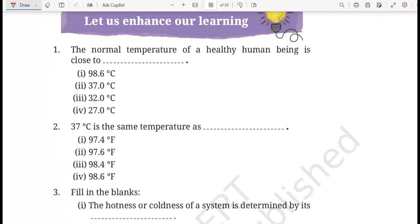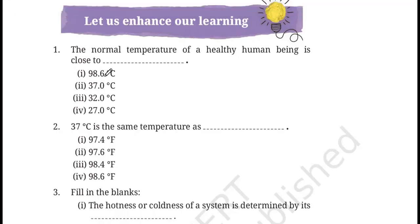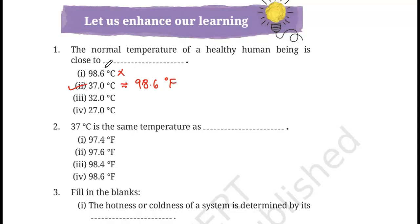Our first question: the normal temperature of a human being is close to — the options are 98.6 degree Celsius, 37 degree Celsius, 32 degree Celsius, or 27 degree Celsius. The correct option is 37 degree Celsius. The option 98.6 is wrong here because it is given in degree Celsius, whereas 98.6 is the Fahrenheit value. So the correct option is option B.